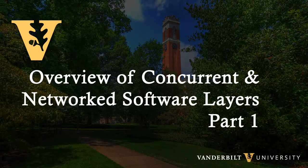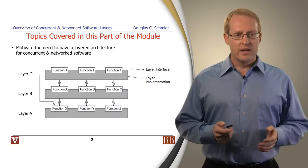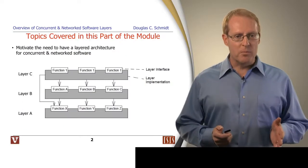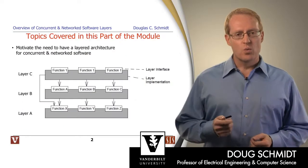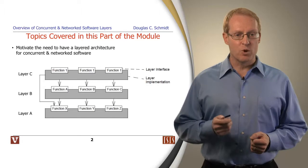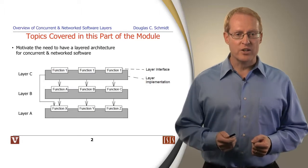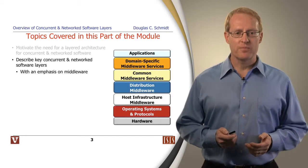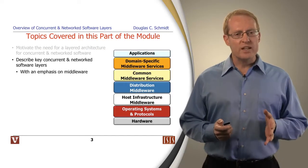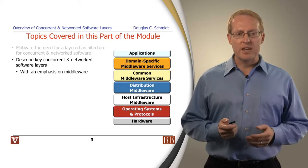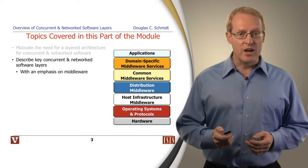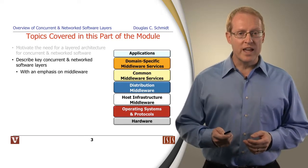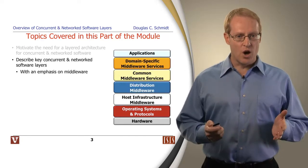Welcome to part one of the overview of concurrent and network software layers. In this part of the module, we'll start out by motivating the need for a layered architecture to use for concurrent and network software. We'll then describe some of the key concurrent and network software layers with an emphasis on middleware.